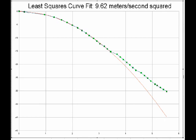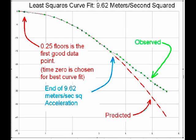The green dots are the actual data, and the dashed red line is the extended curve from the least squares fit. We can see that something happened after about three seconds. If an object falls at 9.6 meters per second squared, all but 2% of the force necessary to hold it up is gone.